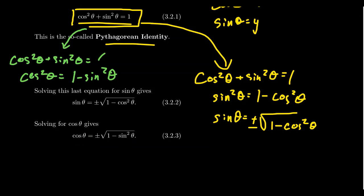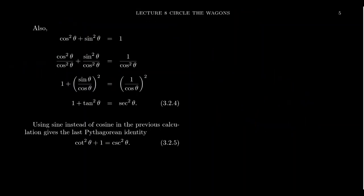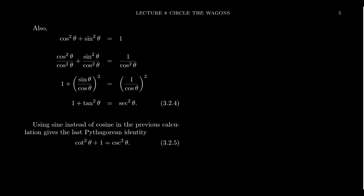We can derive new trigonometric identities from other ones — this most fundamental mom identity, the Pythagorean identity, gives birth to so many other trigonometric identities. Let me give you another example. Consider starting again with the mom identity, cosine squared plus sine squared equals 1. This time, what if we divide both sides of the equation by cosine squared? It seems like an odd thing to do, but let's just do that for a moment.